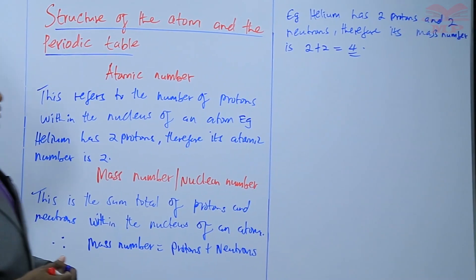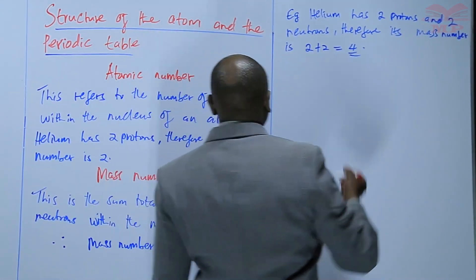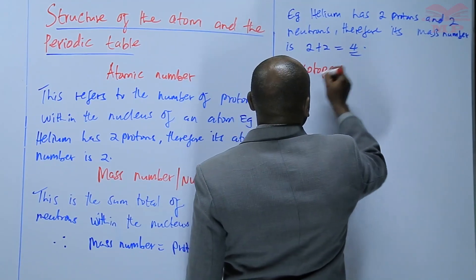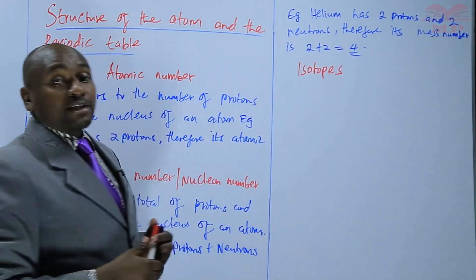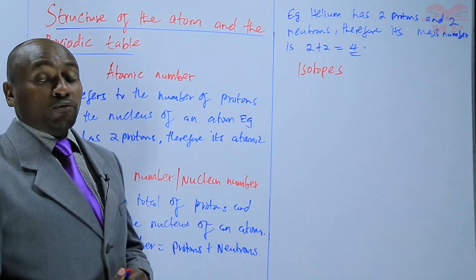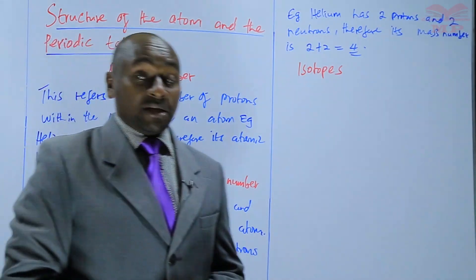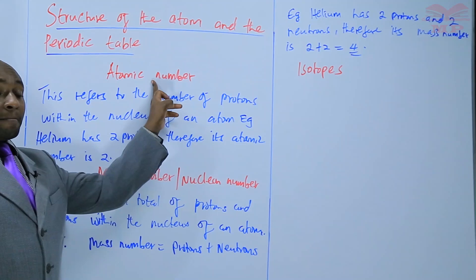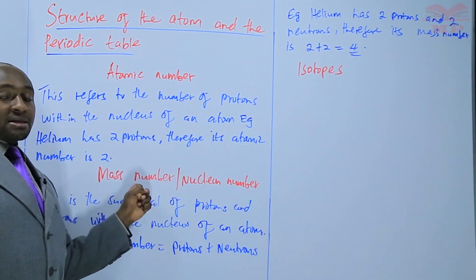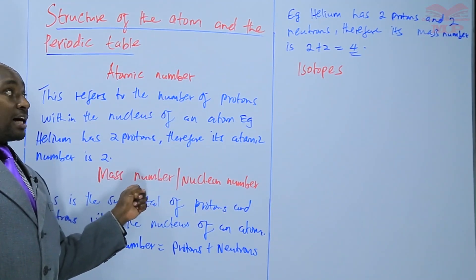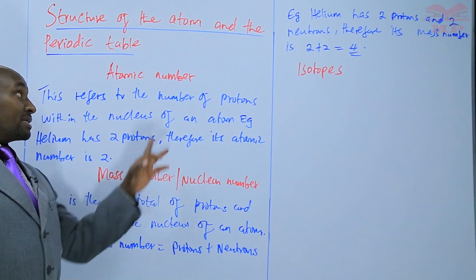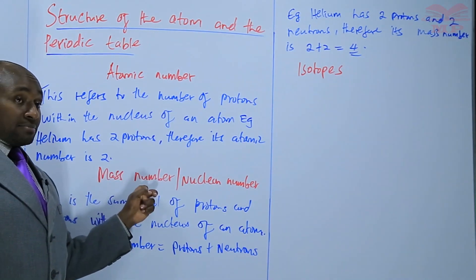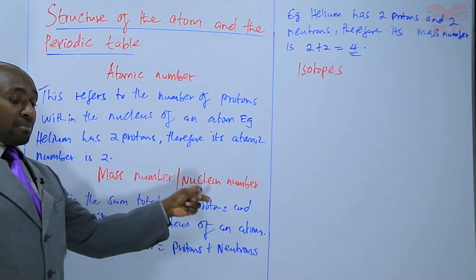The third term that we are going to define is isotopes. Isotopes are atoms of the same element having the same atomic number but different mass number, or different nucleon number.